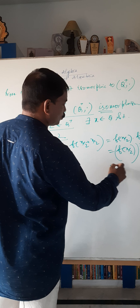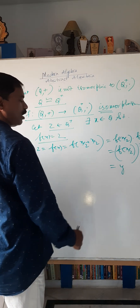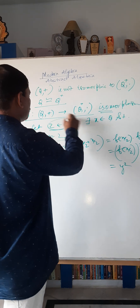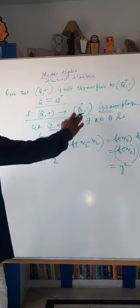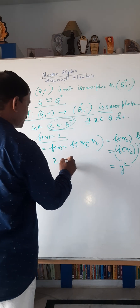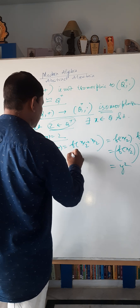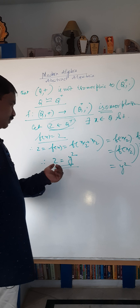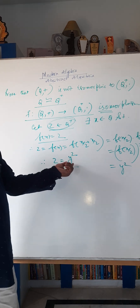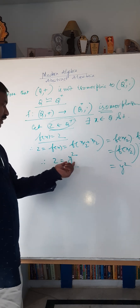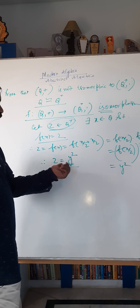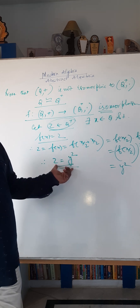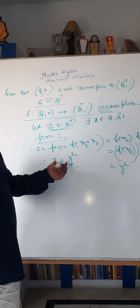Now x divided by 2 is also a rational number, so let it be y. Then f(x) equals y squared, so 2 equals y squared. But there does not exist any rational number y such that 2 equals y squared.